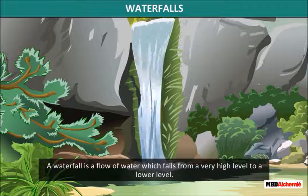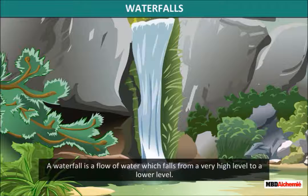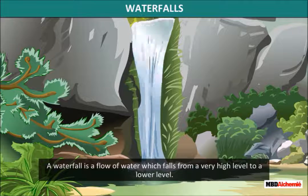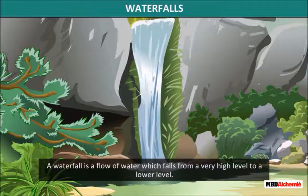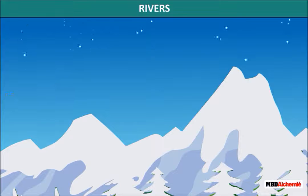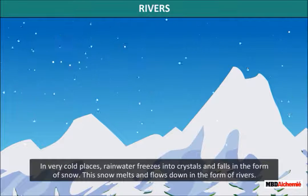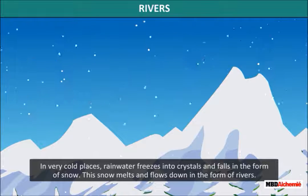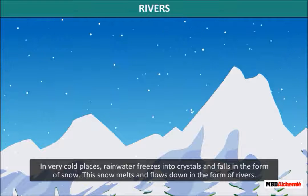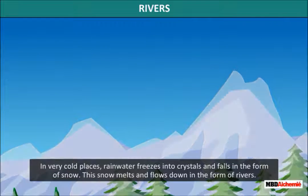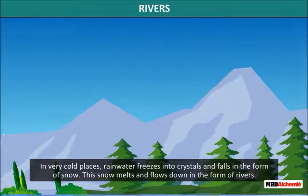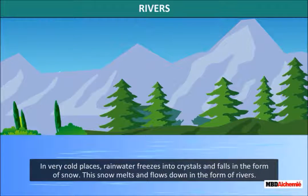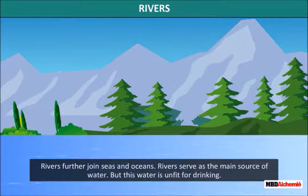Waterfalls: A waterfall is a flow of water which falls from a very high level to a lower level of rivers. In very cold places, rainwater freezes into crystals and falls in the form of snow. This snow melts and flows down in the form of rivers.